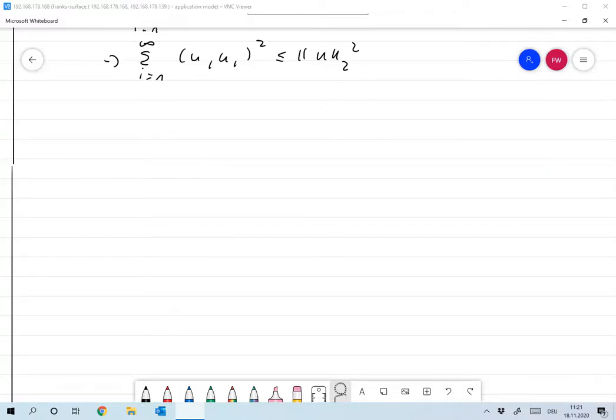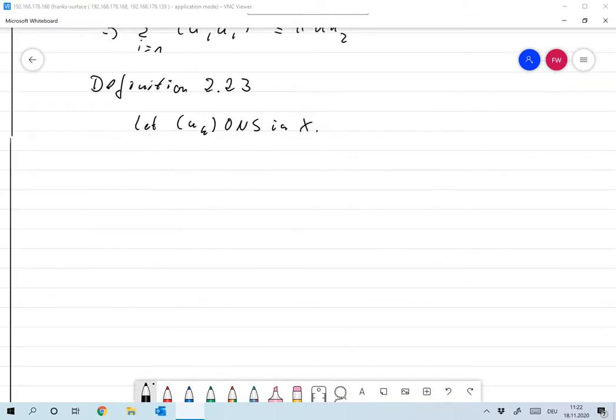Let's continue with Parseval's equation and for that we first need the notion of complete orthonormal systems. So I'll start with definition 2.23.